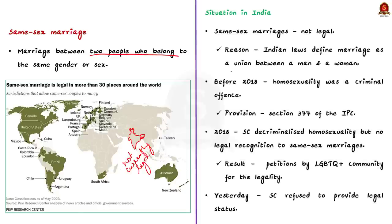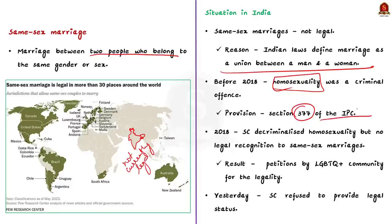However, in 2018 the Supreme Court struck down that provision and decriminalized homosexuality, but did not legalize same-sex marriages at that time. Several petitions were then filed by the LGBTQ+ community for the legality of same-sex marriage. But the Supreme Court refused to provide legal status to same-sex marriage in India, and stated that legal recognition can only be granted by enacting a law.